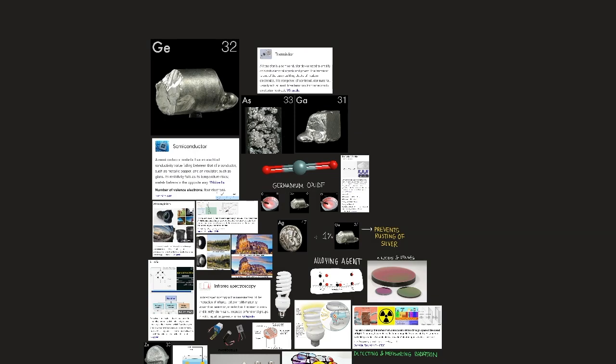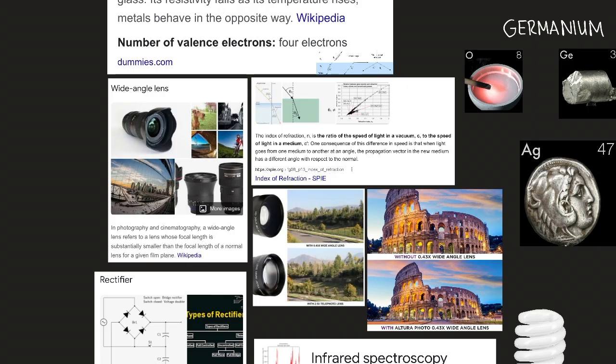The toxicology of germanium and its compounds is poorly defined. Thanks to germanium element number 32, when we take a photograph with a wide-angle lens, we're able to capture more of the scene than we would be able to with a normal varied lens that would be made out of silicon or another type of metal.